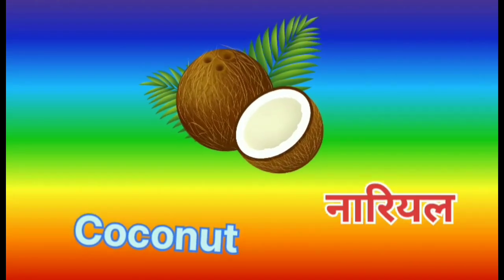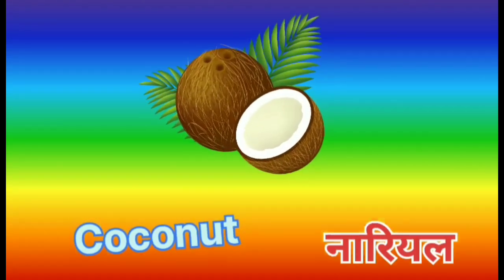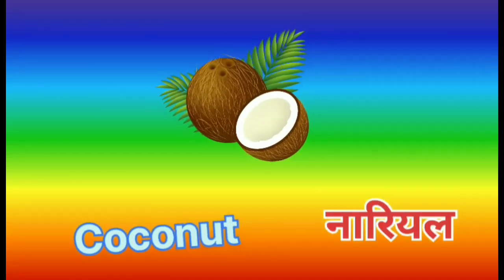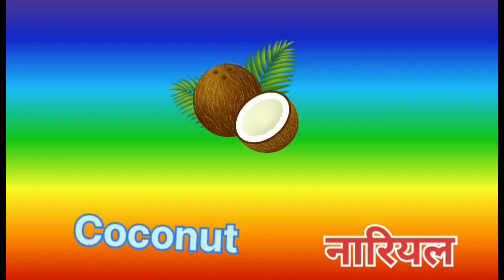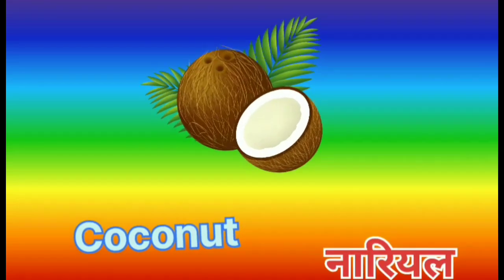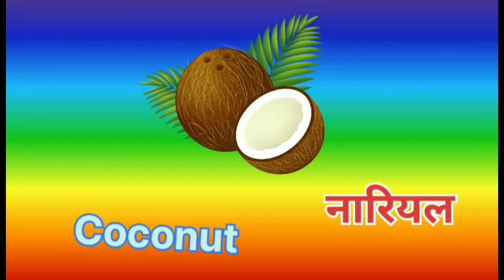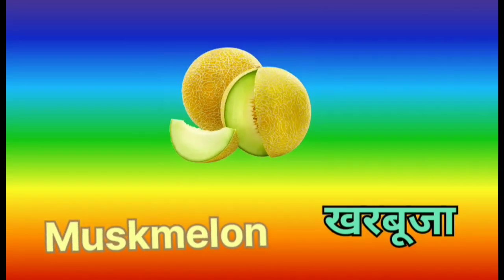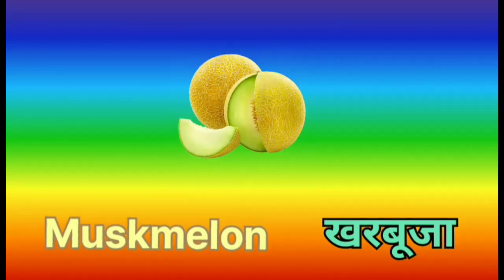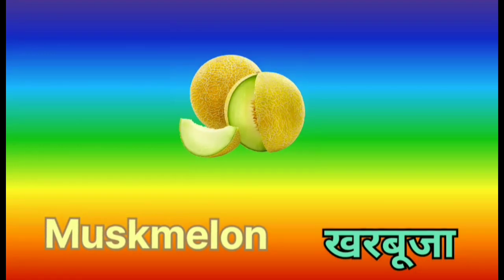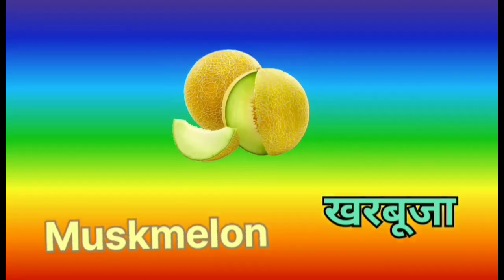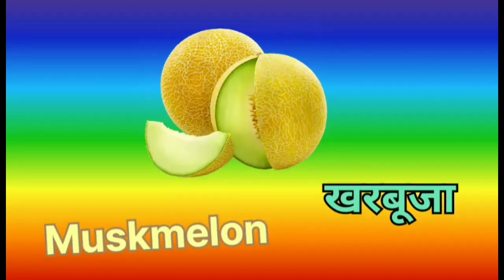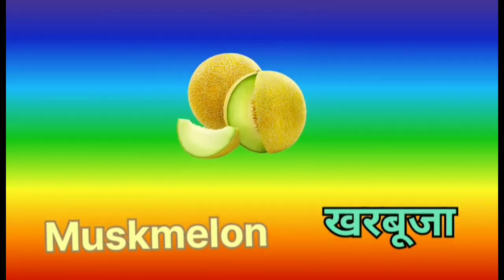This is Coconut. C-O-C-O-N-U-T. Coconut means Narial. This is Musk Melon. M-U-S-K-M-E-L-O-N. Musk Melon means Kharbhooja.